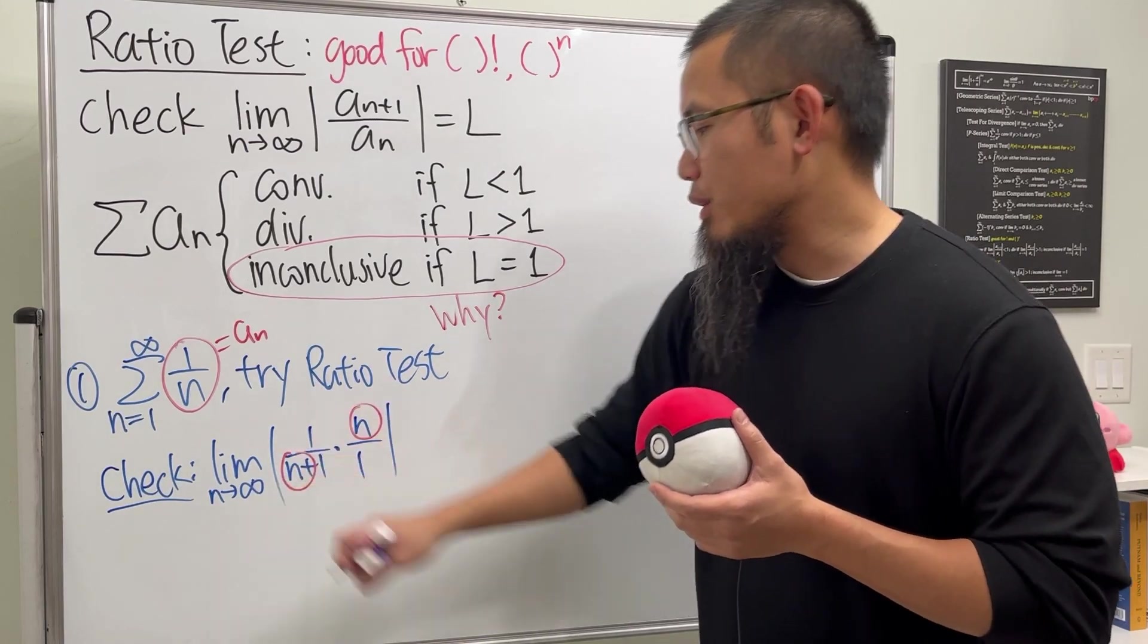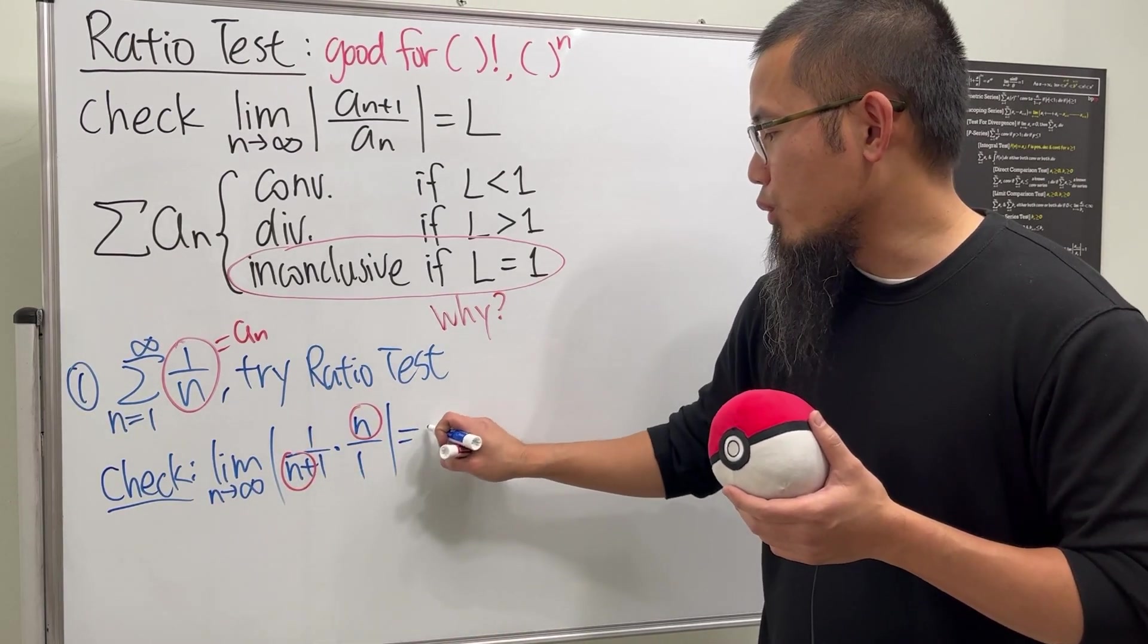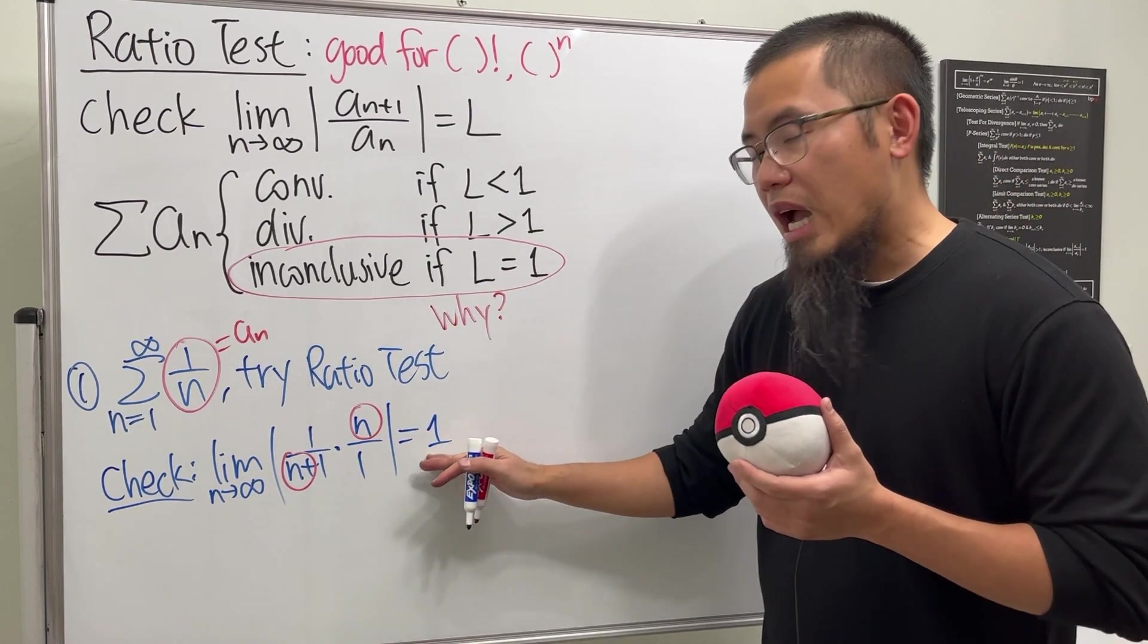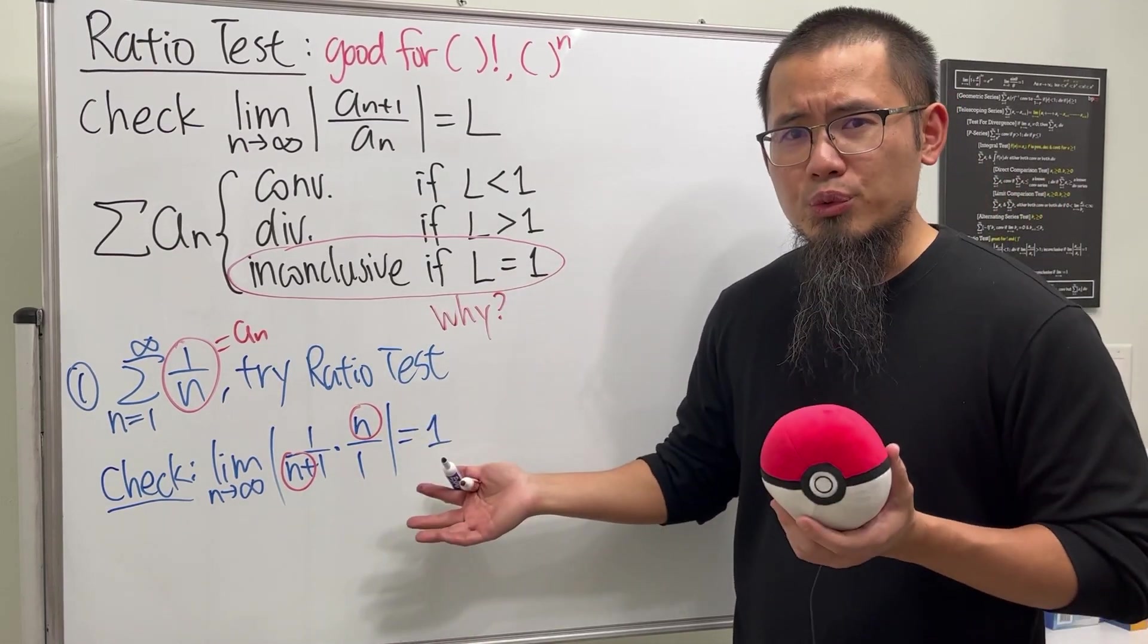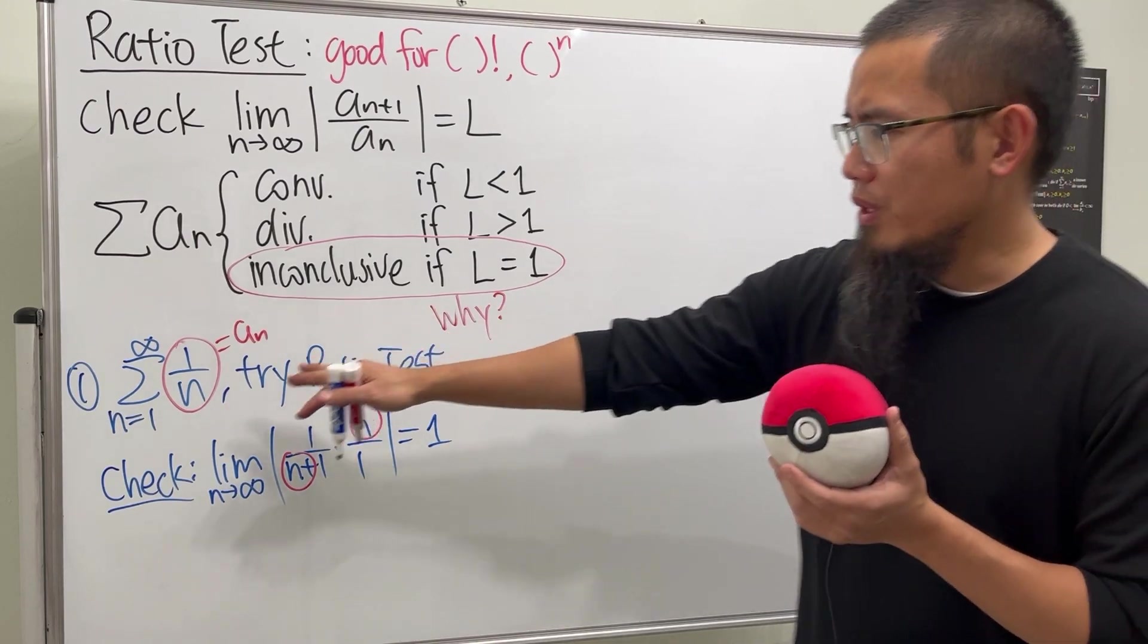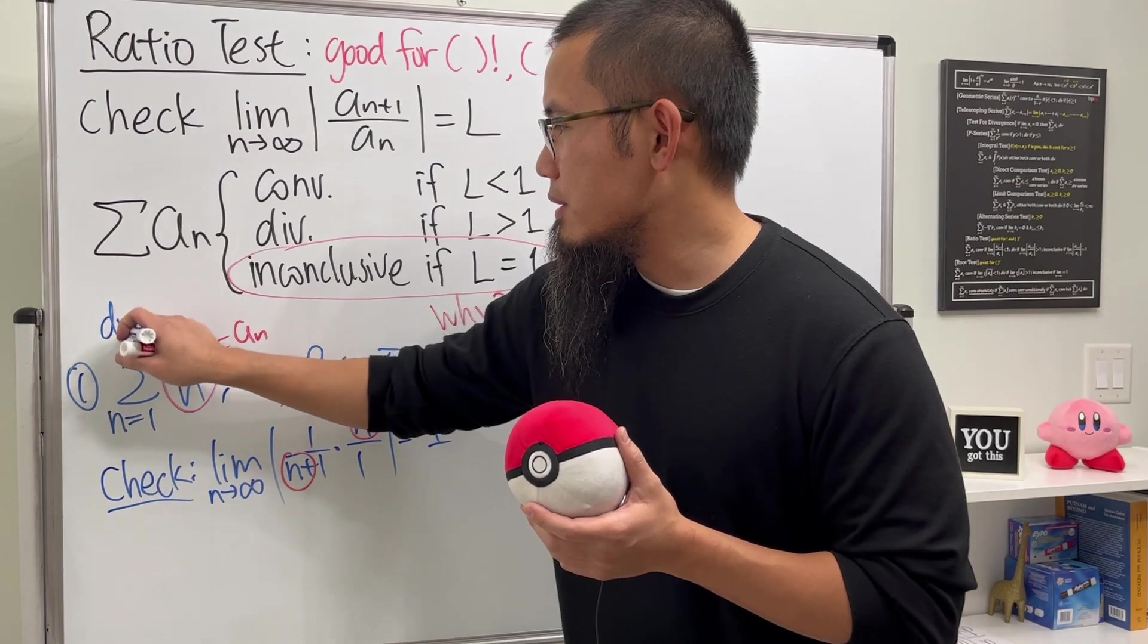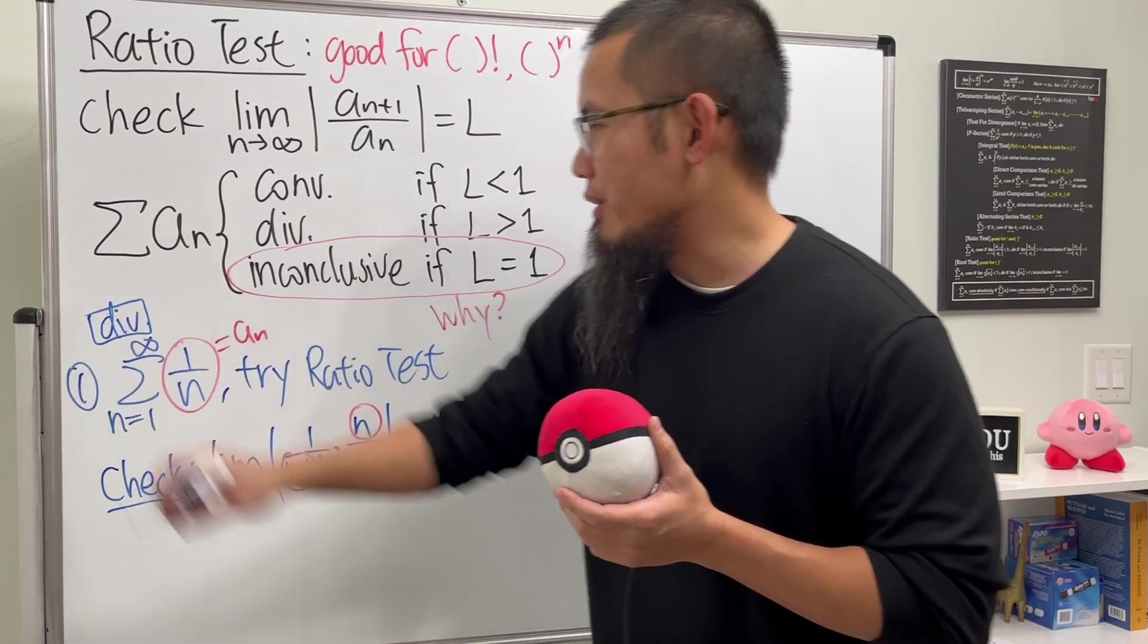And in fact, if you take the limit of this, it's just this and that that we care, so in fact this is equal to one. Based on what this says, you'll see that the L is equal to one, it's inconclusive. But we know this right here from the harmonic series, we know this right here diverges.